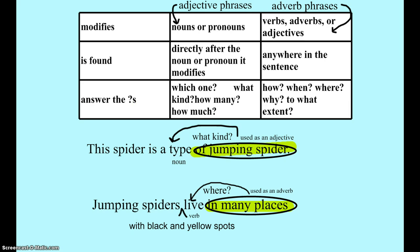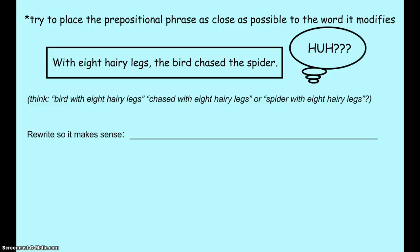What we're really focusing on is why this matters in writing. If prepositional phrases aren't close to the words that they're modifying, the sentence can't make sense. The example sentence was: 'With eight hairy legs, the bird chased the spider.' If I were to read that, I would think I was reading some science fiction mutation story, because it sounds like the bird has the eight hairy legs. So we have to move the prepositional phrase closer to the word it's describing.